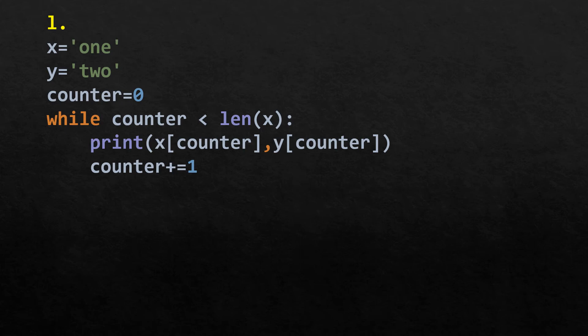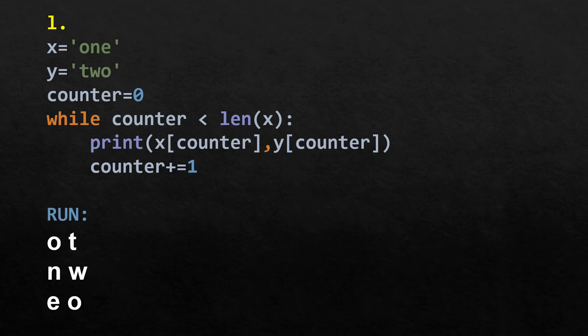x is a string 'ONE1' and y is 'TWO'. While counter < len(x), it prints x[counter] and y[counter], then increments counter. Counter starts at 0, so it first prints O and T, then N and W, then E and O.